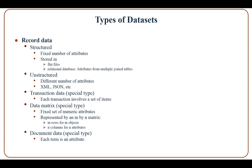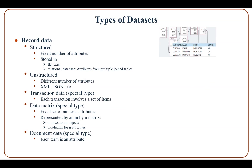The first type is record data, which can be structured or unstructured. With structured record data, a record contains a fixed number of attributes and can be stored in flat files or relational databases, in which attributes can be from multiple join tables.